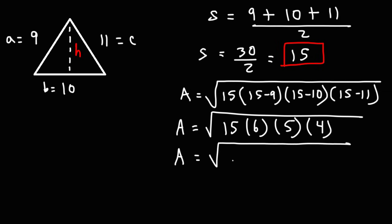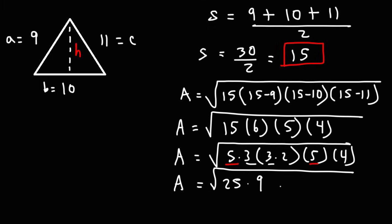So first, I'm going to break down 15 into 5 and 3. 6, I'm going to write that as 3 and 2. I'm going to leave the 5 and the 4 alone. Now I'm going to combine 5 and 5 and make that 25. And then 3 and 3, I'm going to make it 9. And then I'm going to leave this 4 alone. And I'm not going to change it 2.